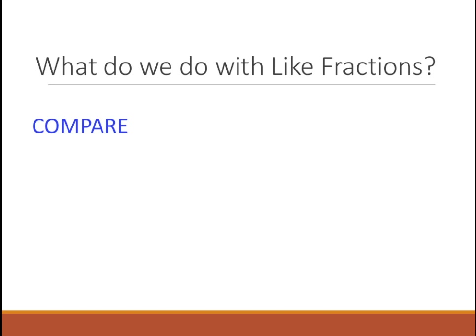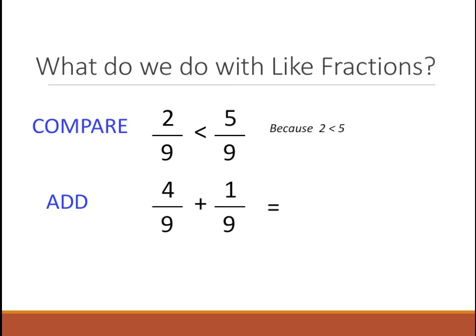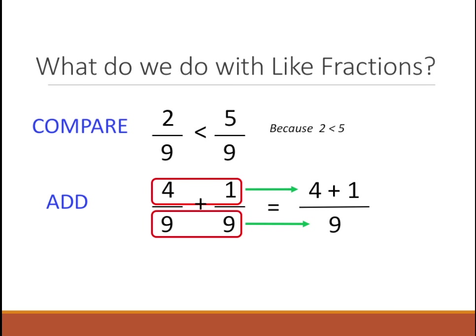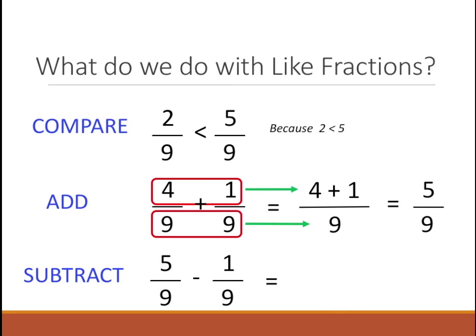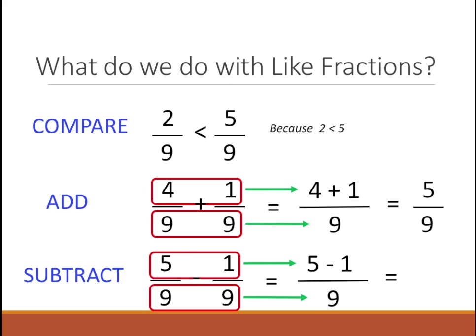So what do we do with like fractions? We can compare them. We can say 2 by 9 is less than 5 by 9 because 2 is less than 5. We can add them because these are like fractions and they have the same denominators. We're going to add 4 plus 1 and put the denominator as is, and then we say it's 5 by 9.